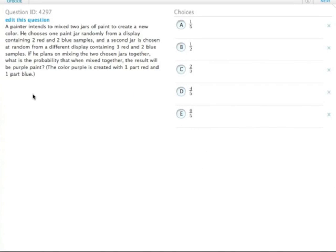So the painter is mixing two jars of paint to create a new color, and he has two different displays that he's choosing random jars of paint from, and he's going to make his new color.